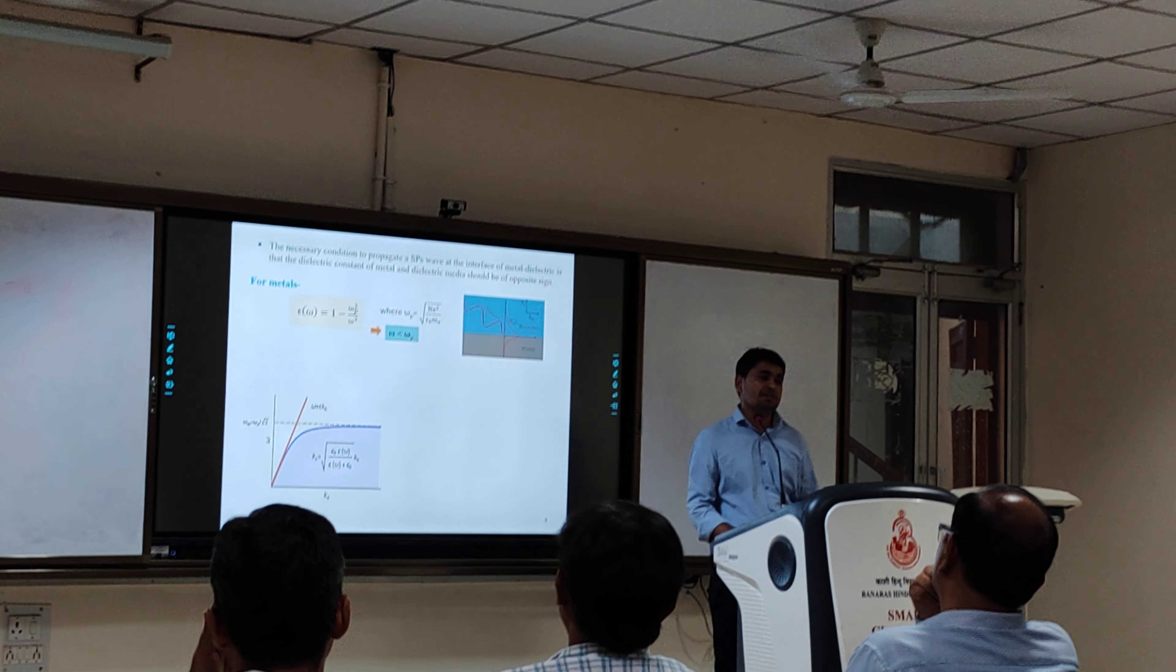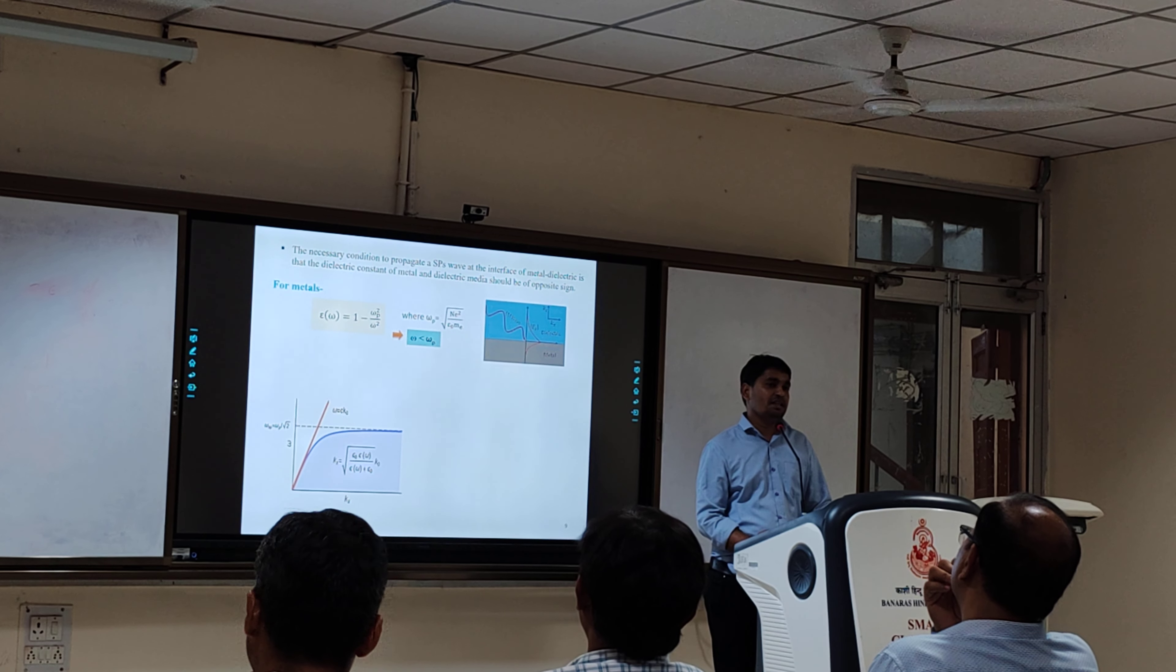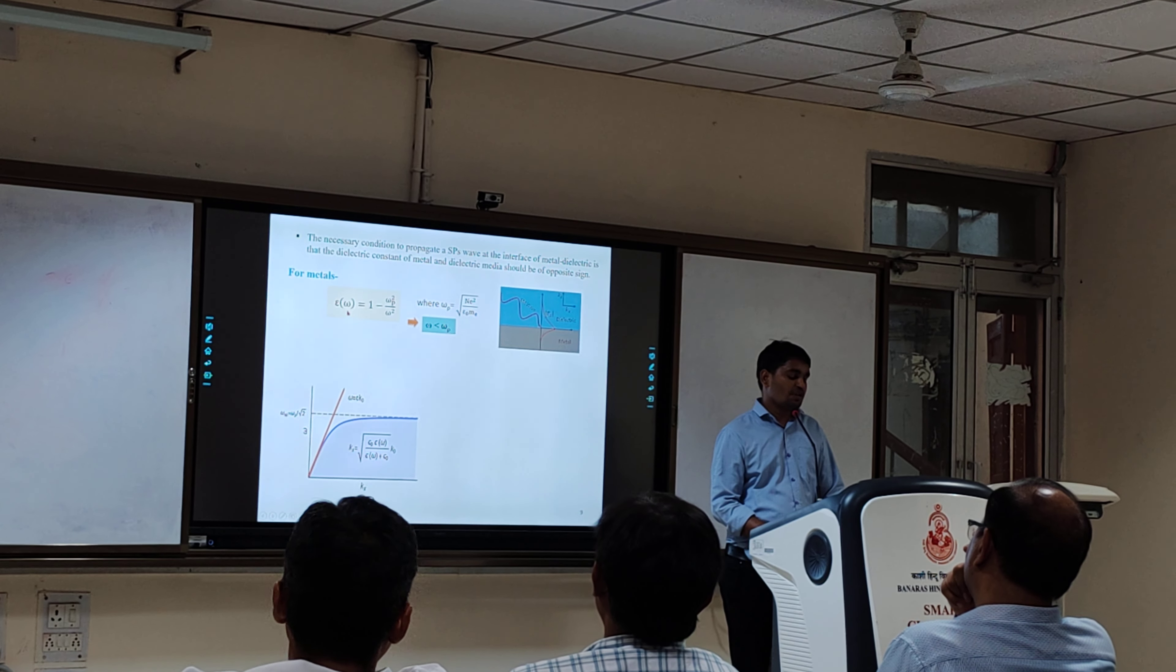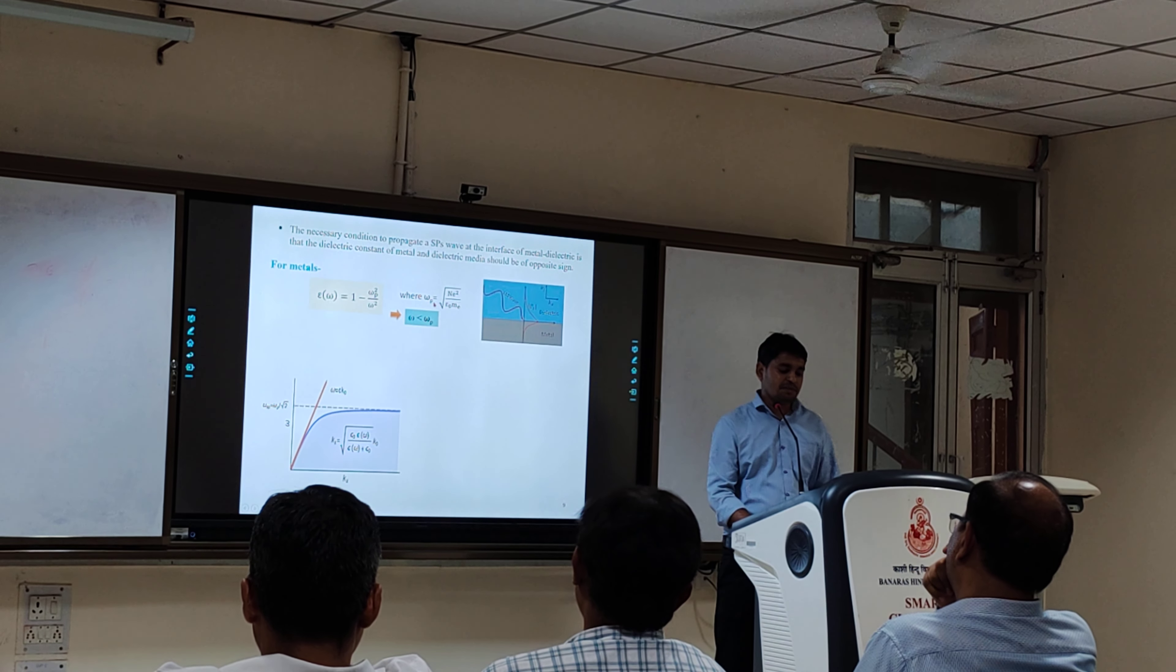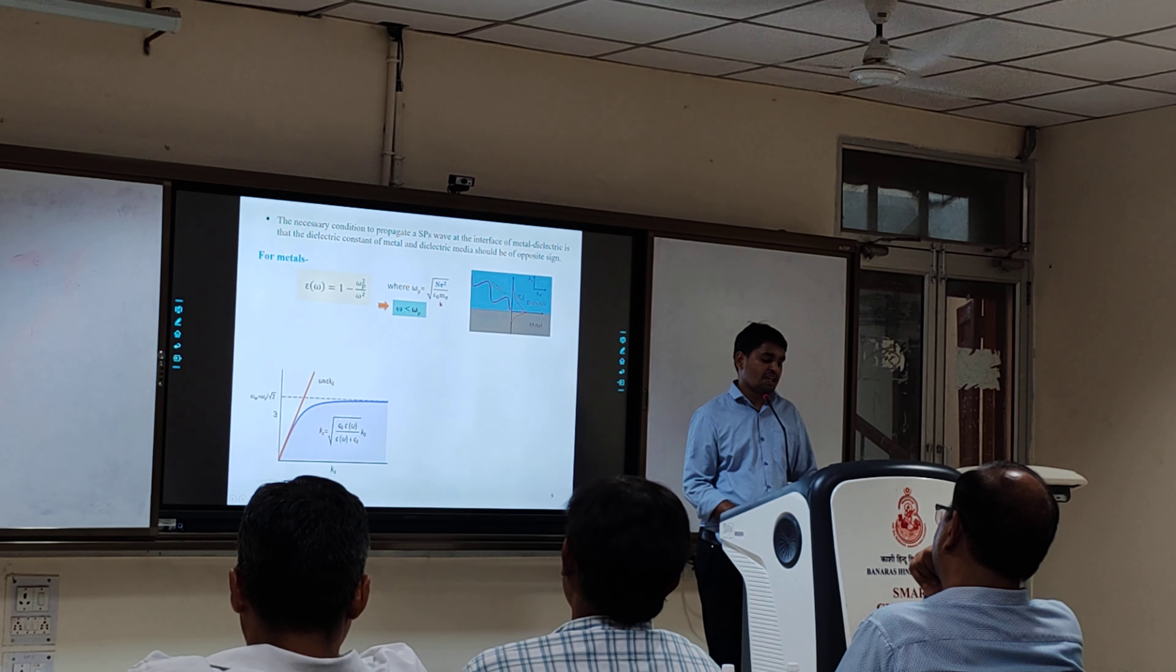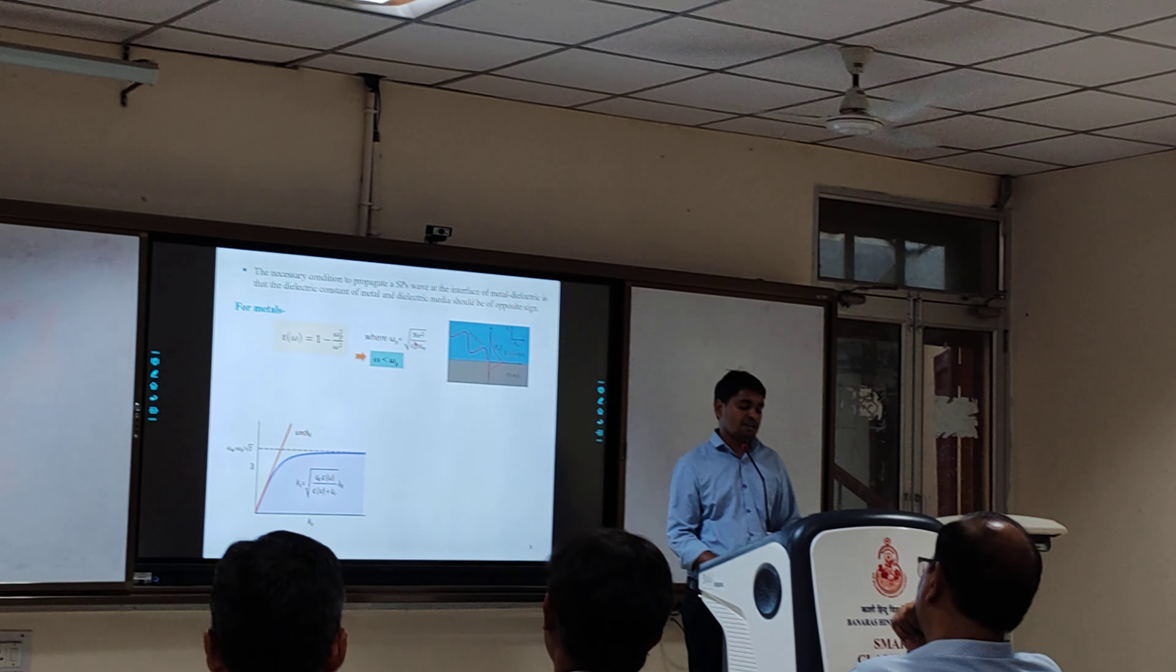The dielectric constant can be positive or negative if we consider the frequency dependence determined by Drude model, as given by the relation ε(ω) = 1 - ωp²/ω², where ωp is the plasma frequency which equals √(ne²/ε₀m). The plasma frequency depends upon the density of electrons.